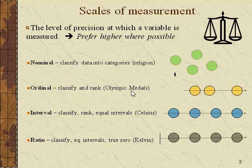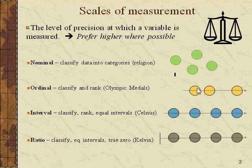Ordinal — one step up — comes from the root to order. This is where you're not only classifying as you do with nominal, but you're also ranking. Think about Olympic medals: gold is higher than silver, which is higher than bronze. But note that the intervals between them are not necessarily consistent — you can't say the difference between these two people is the same as the distance between those two.